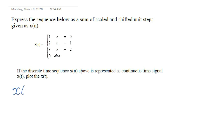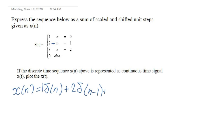We have x of n given as an impulse signal, which is sigma of n. For the first condition where we have one, we put a one here. Plus we have two, which is the second condition: two sigma into n minus one. Then the next condition is three, giving us three sigma into n minus two. We have now performed the signal decomposition.